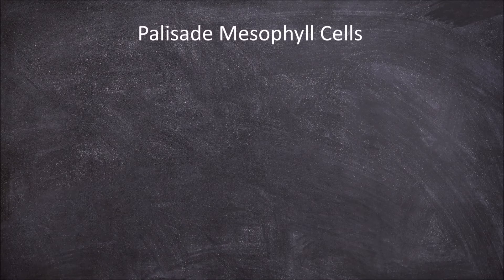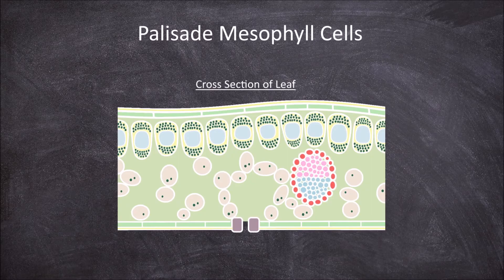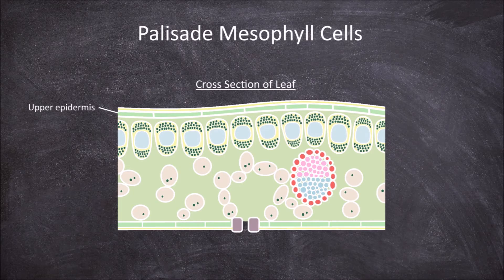In this video we're going to take a look at the structure and function of palisade mesophyll cells within the leaf. The leaf consists of the epidermis, which is found on both the upper and lower surfaces of the leaf.